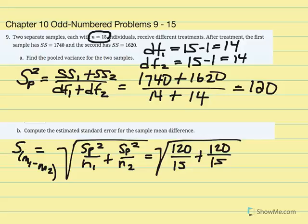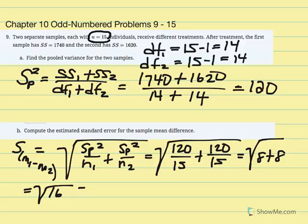Remember, in this case we have equal sample sizes, but that isn't always the case, which is why it's necessary to calculate pooled variance. Taking these as separate fractions: 120 divided by 15 equals 8, so 8 plus 8 is 16. We're looking for the square root of 16, which equals 4. So our estimated standard error of the mean difference is 4.